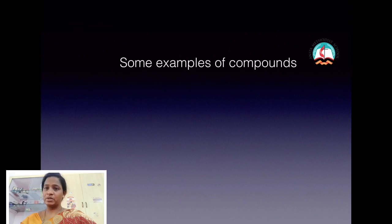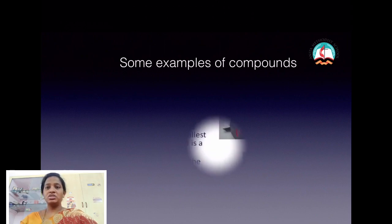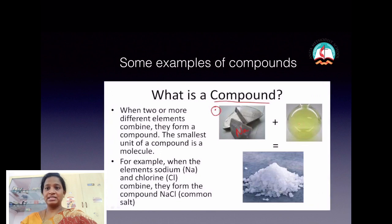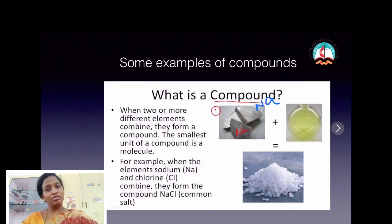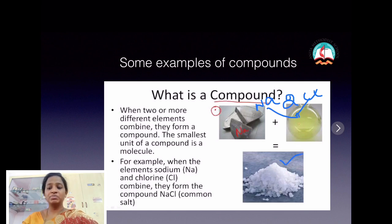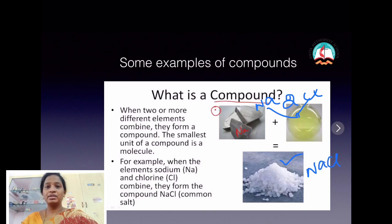Next, we are going to see some examples of compounds. Common salt, which we use in our day-to-day life, is an example of a compound. Common salt is a combination of two elements, namely sodium and chlorine, which combine in a ratio of one is to one, forming a compound called sodium chloride.